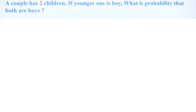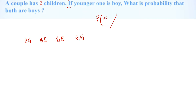To clarify: a couple has two children — boy-girl, boy-boy, girl-boy, or girl-girl. Now the condition is: if the younger one is a boy, what is the probability that both are boys?